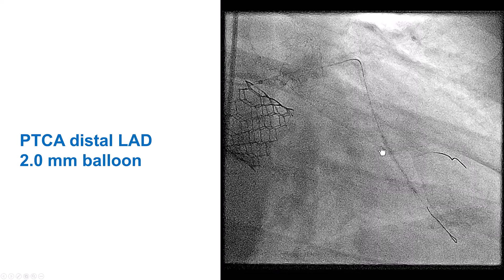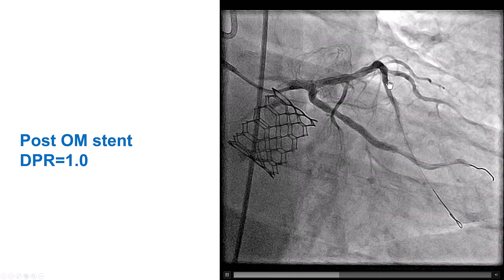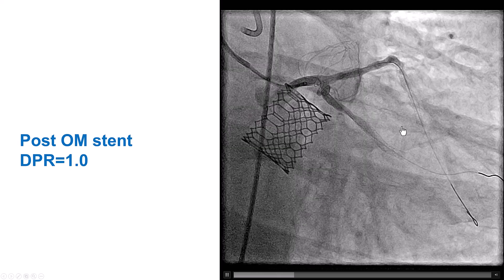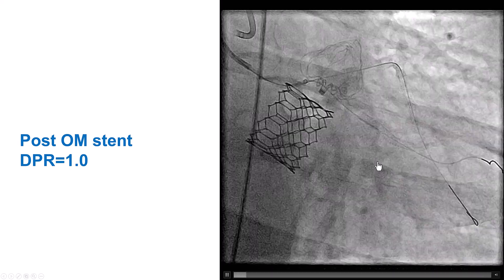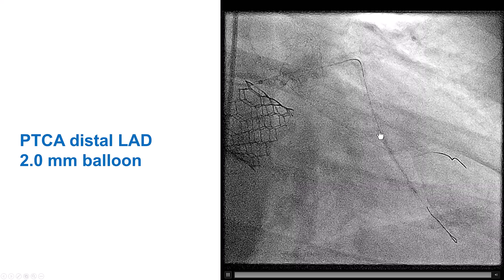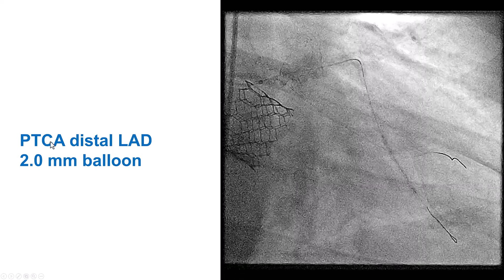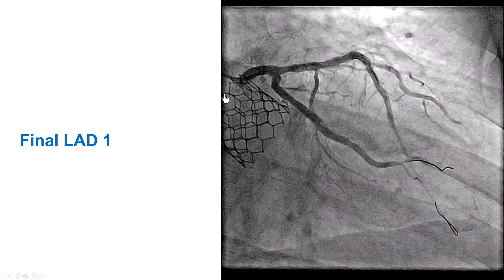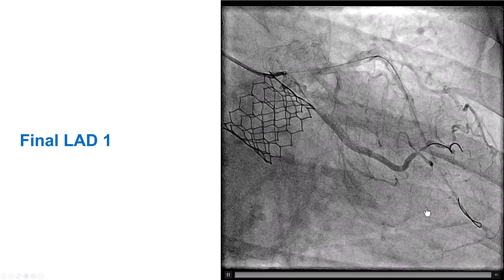The patient did have relatively poor flow into the LAD — the flow was not great despite stenting. We thought this could be due to diffuse disease in the distal vessel, so we performed additional dilations of the mid and distal LAD, distal to the previous stent, using a 2.0 mm balloon with prolonged balloon inflations. After doing that, we had much better TIMI-3 flow all the way to the distal LAD.